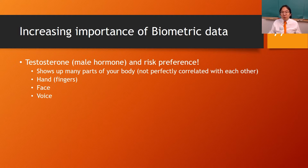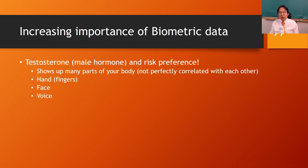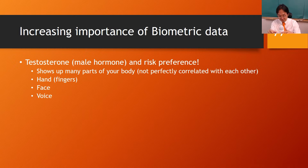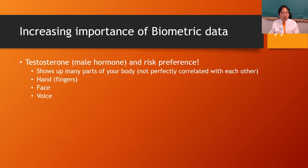The increasing importance of biometric data is the point I'm trying to make. Biological information like testosterone is related to your risk preference. If there is a way to measure or approximate testosterone levels, why not use it? It shows up in many parts of your body — your hand and fingers, your face, and your voice.